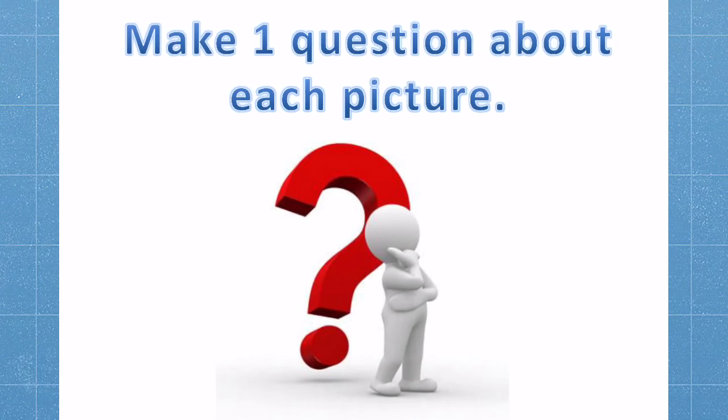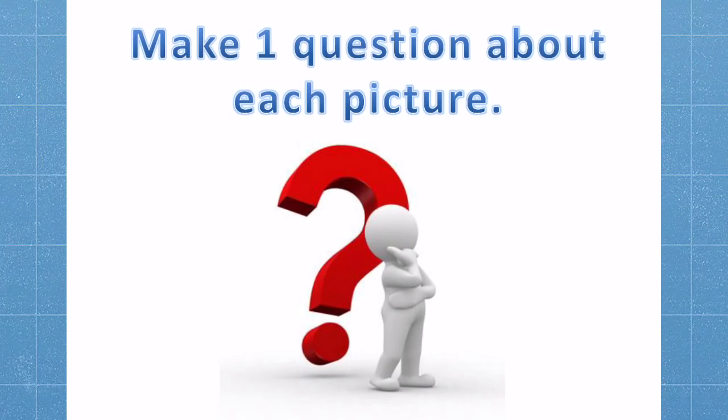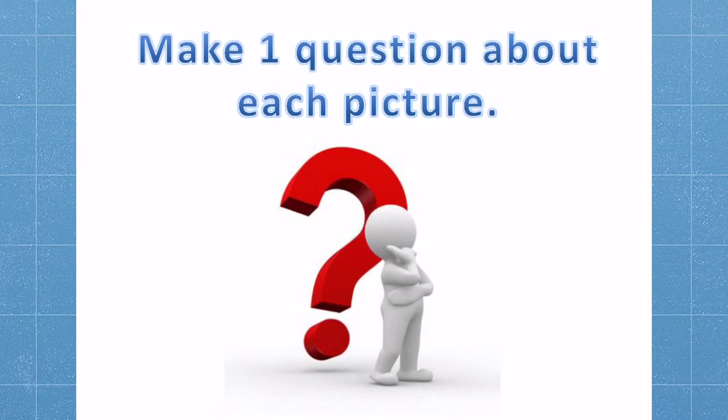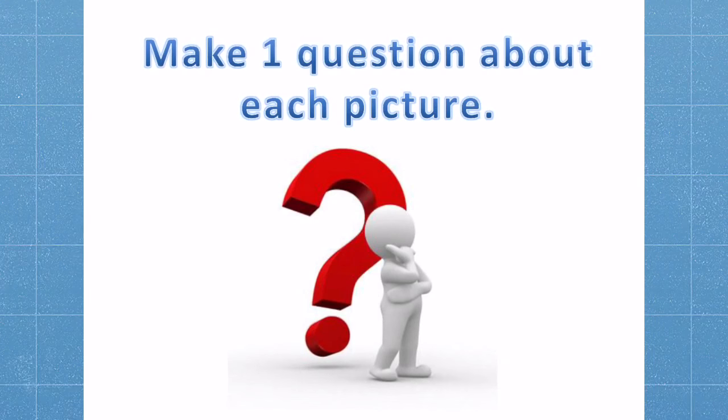When they have answered both questions, now it is their turn to ask the teacher a question. They use the blank provided in space number three to write a who, what, where, when, why, how, which question about the picture.